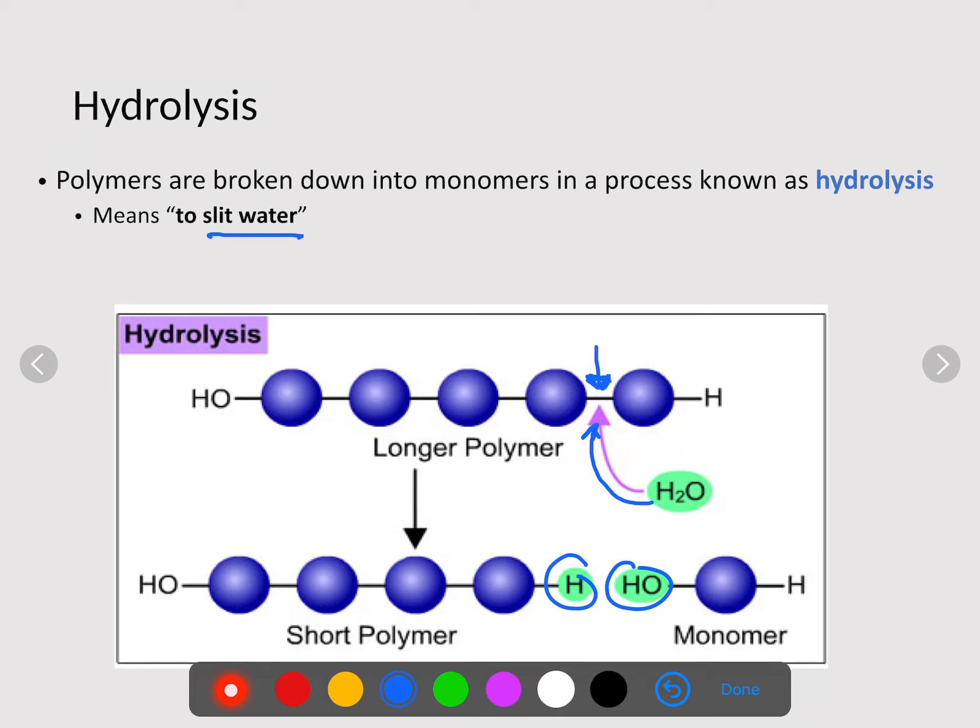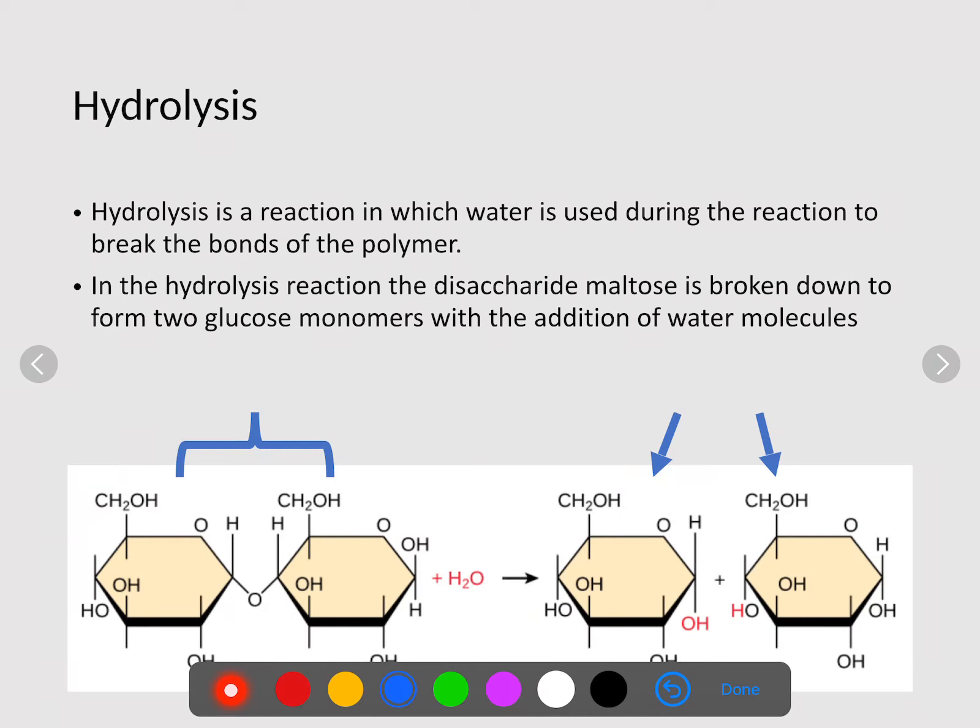In hydrolysis, it is a reaction in which water is used during the reaction to break the bond. Water is brought in to break this, so we are going from polymers, many, and we're breaking it apart to form our two monomers. Hydrolysis: polymer to monomer, breaking bonds.